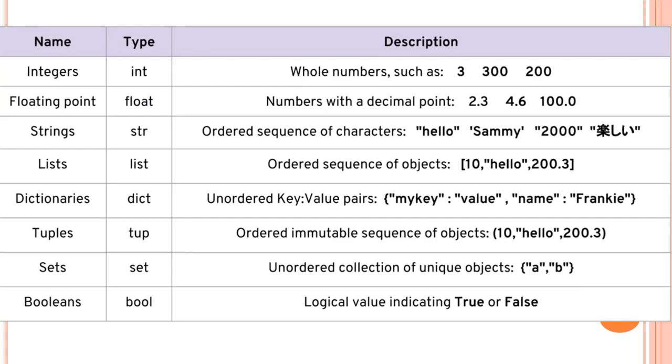We have integers, we have floating point numbers or decimal, we have strings, we have list, we have dictionaries, tuples, set, booleans. One by one we are gonna look into all of them.